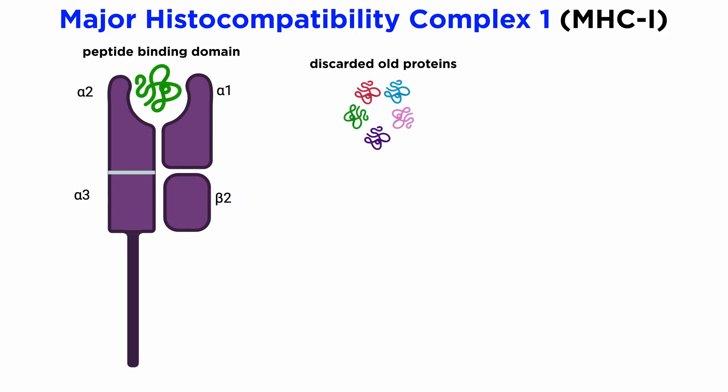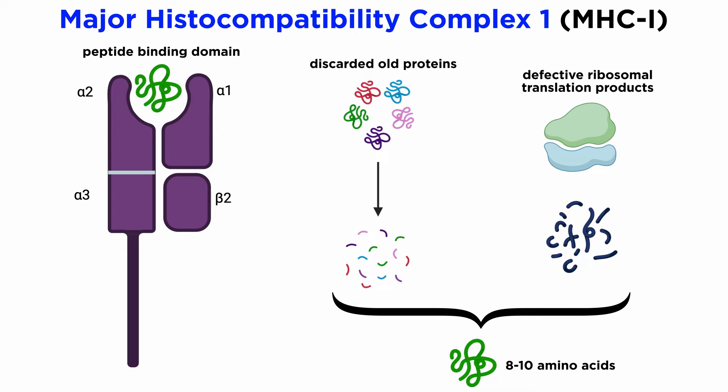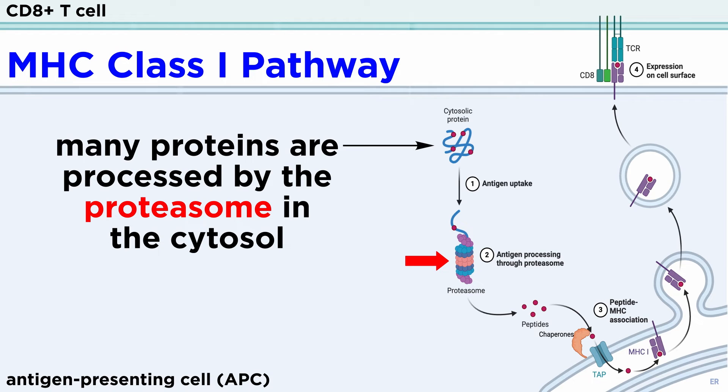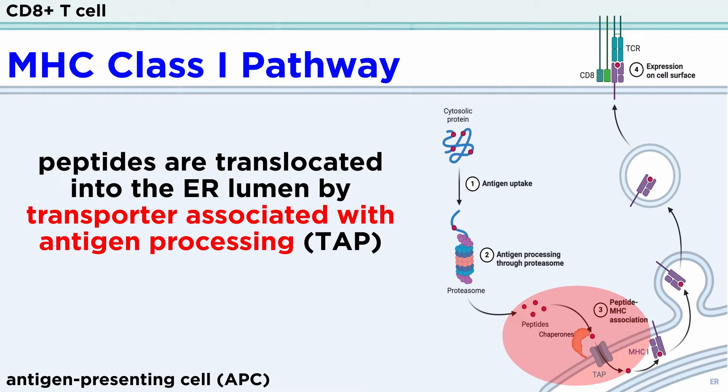It was thought that the majority of peptides presented by MHC class I molecules are discarded old proteins. However, most of the peptides presented by MHC class I molecules are derived from defective ribosomal translation products. These proteins are degraded by the multi-subunit proteasome complex in the cytosol. This process is central to MHC class I function as it allows the pathway to sample and test a diverse array of proteins as soon as they are synthesized, allowing CD8+ T cells to immediately detect the presence of a virus in an infected cell. A multitude of proteins are processed by the proteasome in the cytosol.